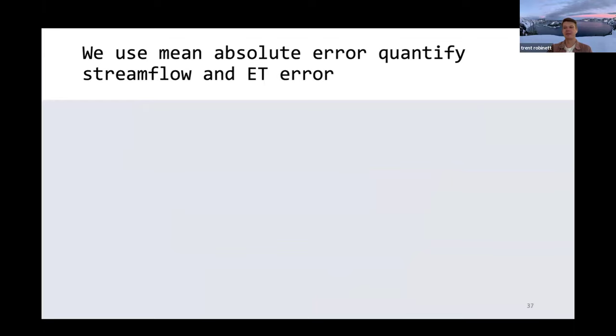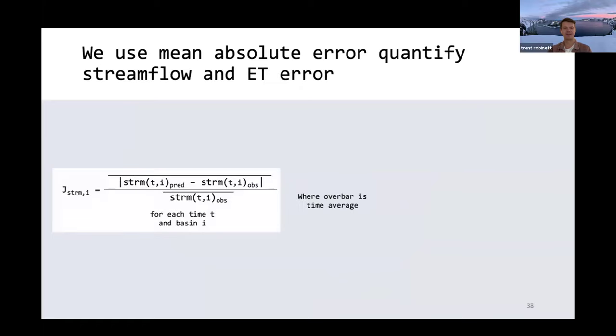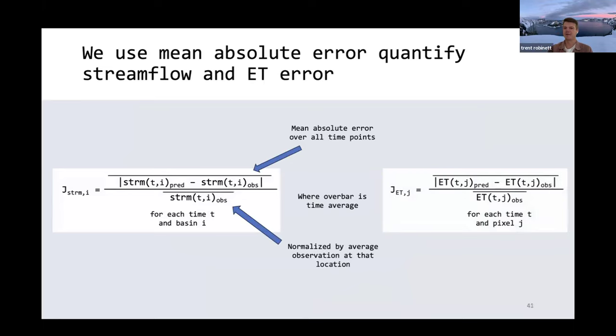Finally, I just wanted to define how I'm going to evaluate our model improvement or degradation compared to PFTs with this new parameter prediction method. This objective function looks scary, but basically to look at how our stream flow was improving, we're just taking the mean absolute error at each basin over all time points and normalizing it by the average stream flow at that basin. We use the exact same objective function for our ET predictions, where we take our mean absolute error for ET at each time point and then normalize that by the ET at that model pixel.